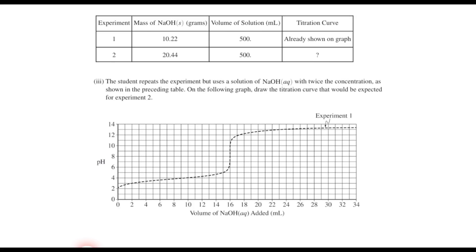Now, as we move on, we have the same titration curve, but now we have a repeat of this experiment. It says the student repeats the experiment but uses a solution of sodium hydroxide with twice the concentration as shown in the preceding table. On the graph, draw the titration curve that would be expected for experiment 2, where experiment 1 is already shown on the graph. Well, there are a few things we need to realize. First of all, we should realize that the acid hasn't changed. The only thing that's changed is we've doubled the concentration of the base.